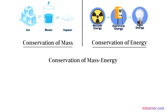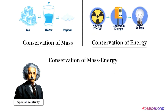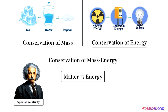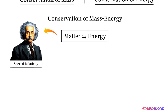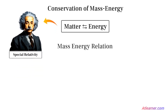In modern physics, according to Einstein's theory of relativity, matter can be converted into energy and energy can be converted into matter, because a fundamental relationship exists between these two kinds of entities. This relationship between mass and energy was first correctly deduced by Einstein, and is known as the mass-energy relation.